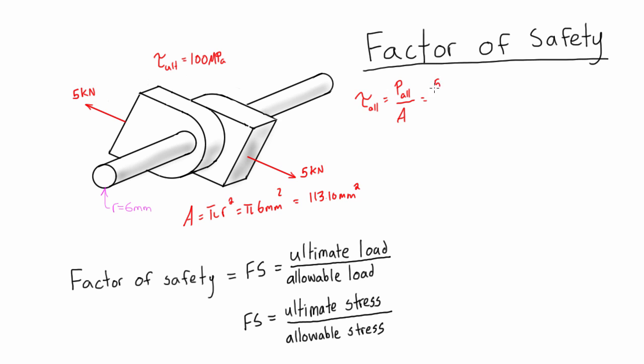So when we go and plug that into our shear stress calculation here, we have five kilonewtons over 113.10 millimeters squared. And that gives us 0.0442 kilonewtons per millimeter squared.